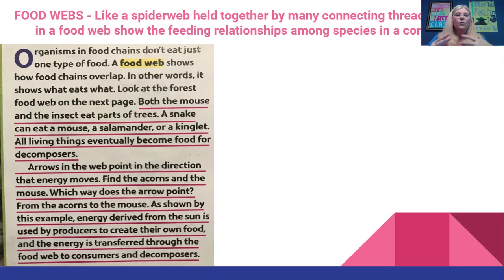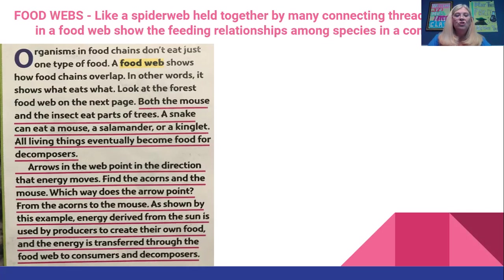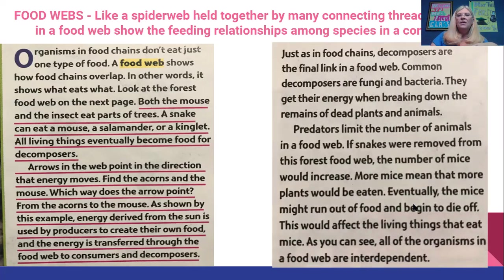On the next slide we're going to look at a forest food web. You can see that the mouse and insects both eat parts of the same tree. A snake can eat a mouse, a salamander, or a kinglet, and all these living things eventually become food for decomposers. Arrows around the web point in the direction that the energy moves. The tree creates its own food and its energy is transferred through the food web to consumers and decomposers. Just as in food chains, decomposers are the final link in a food web — common decomposers are fungi and bacteria.